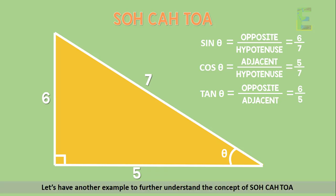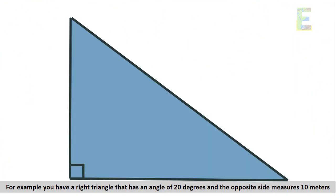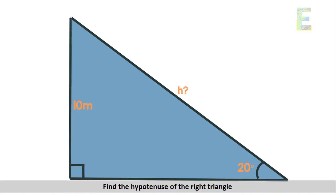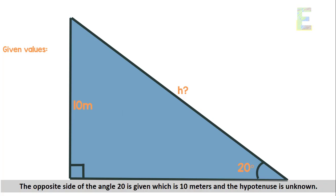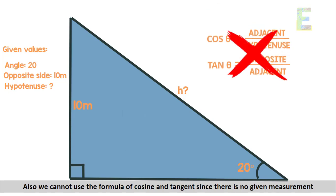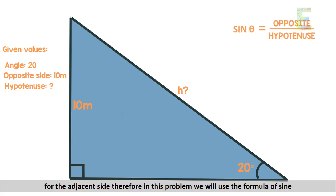Now let's have another example to further understand SOH-CAH-TOA. Suppose you have a right triangle with an angle of 20 degrees and the opposite side measures 10 meters. Find the hypotenuse of the right triangle. We need to analyze the given values first. The opposite side of the 20-degree angle is 10 meters and the hypotenuse is unknown. We cannot use cosine or tangent since there is no given measurement for the adjacent side. Therefore, we will use the sine formula: sine theta equals opposite over hypotenuse.